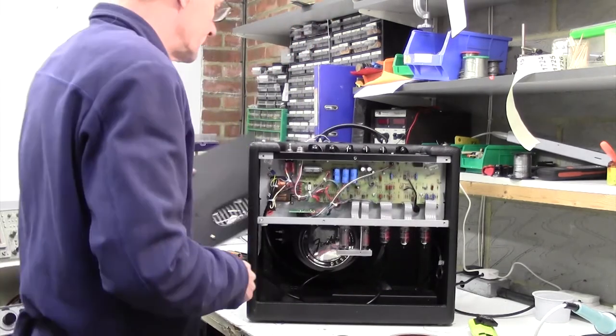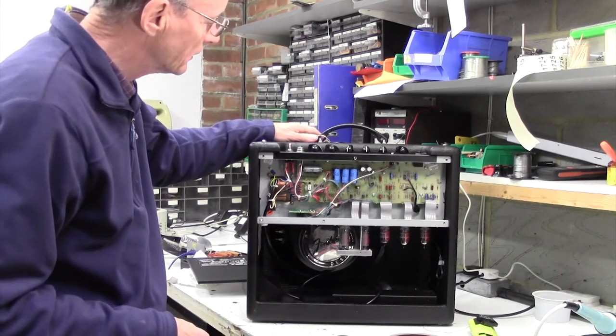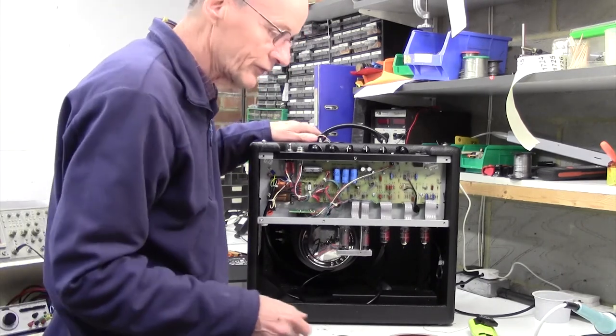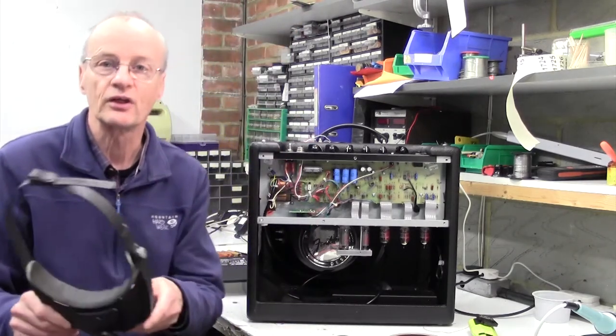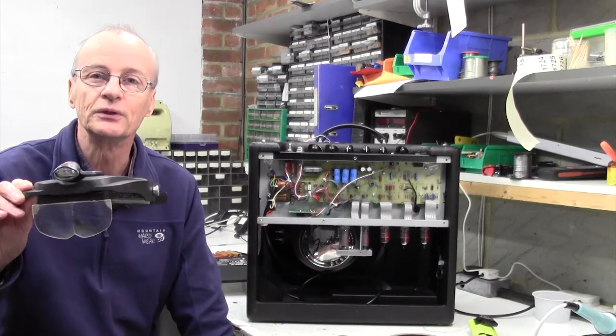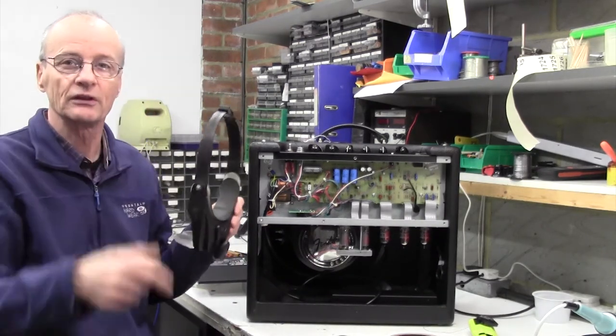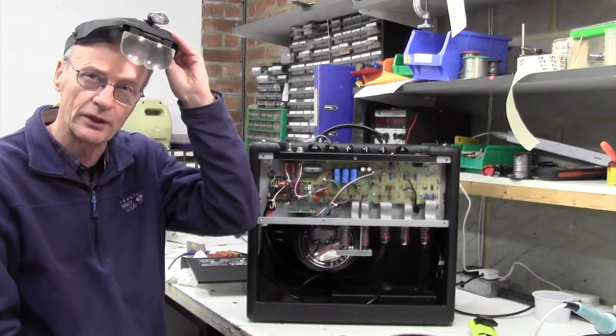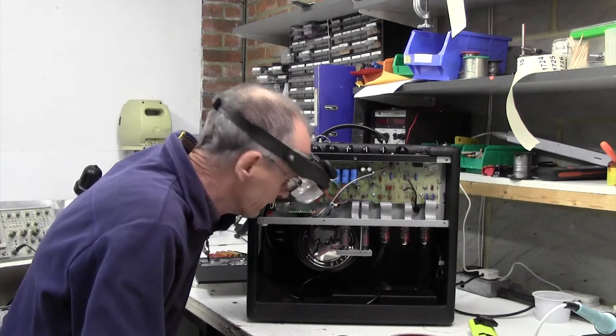So let's have a look. There we go, there's the back off. Okay, so it looks nice and clean inside, nothing obvious at the moment. This is a quite useful piece of kit, a little headband with a magnifying glass, so let's just have a little look inside.